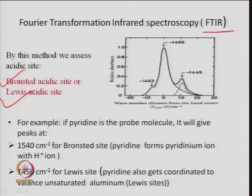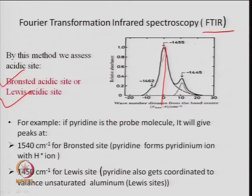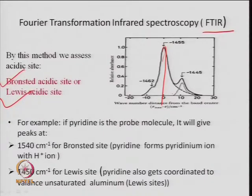By FTIR we can find out Brønsted type or Lewis type acidity. The wave number — measured as distance from the band center — can be negative as it is relative. One can see peaks at different wave numbers such as 1455, minus 1462, minus 1455, and so on. The relative absorbance in the FTIR of the catalyst gives information; depending on acidity, the absorption band will be different.